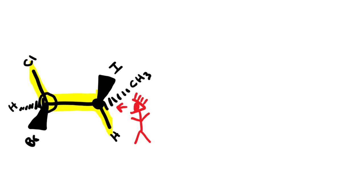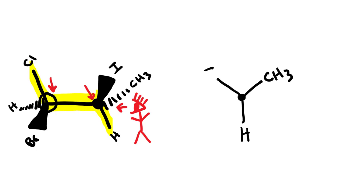Remember, the front carbon is closer to cyclops man and the back carbon is further away. Looking at the front carbon: there's a hydrogen pointing straight down; there's a methyl on a dash, which from cyclops man's perspective means he'd be reaching up and to the right; and the iodine is on a wedge coming out of the screen, so from his perspective it would be up and to his left. For the back carbon: there's a chlorine straight up; a bromine on a wedge going down, so cyclops man reaches down and to the left; and a hydrogen on a dash going down, which would be down and to the right from his perspective.